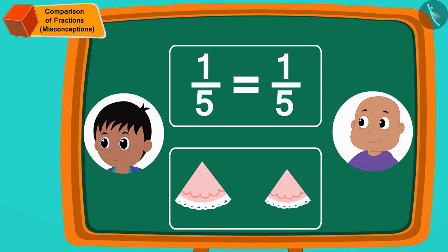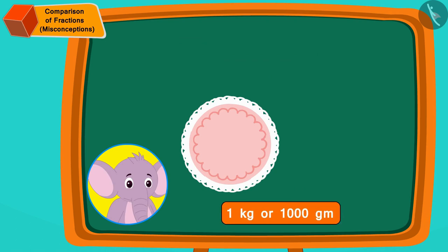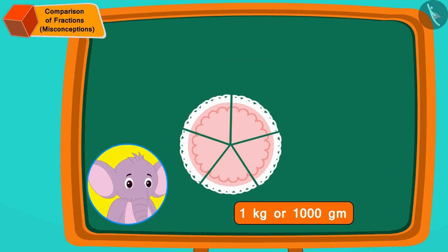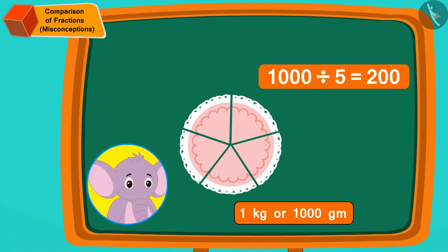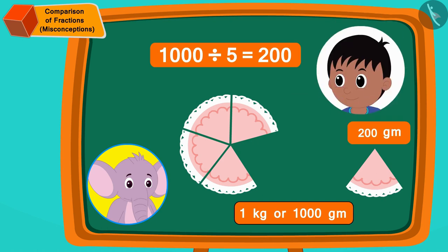Appu's cake is one kg or one thousand grams. Now if we divide it into five equal parts, then how many grams is each part exactly? Every part is one thousand divided by five, or two hundred grams. In this way, Rajoo got one portion of Appu's cake, or two hundred grams of cake.